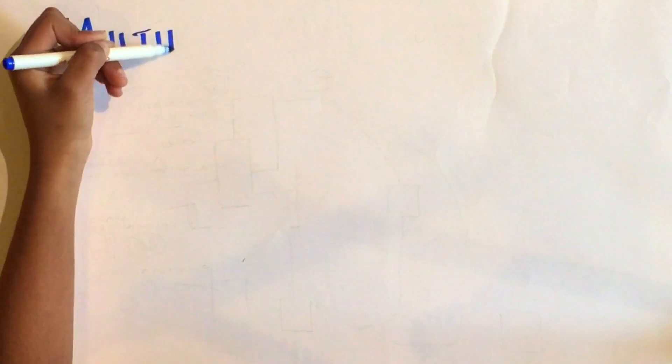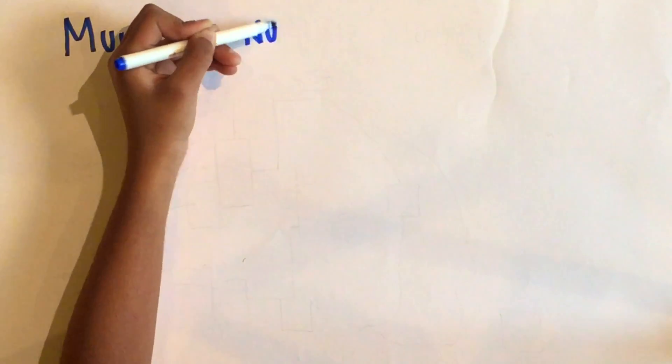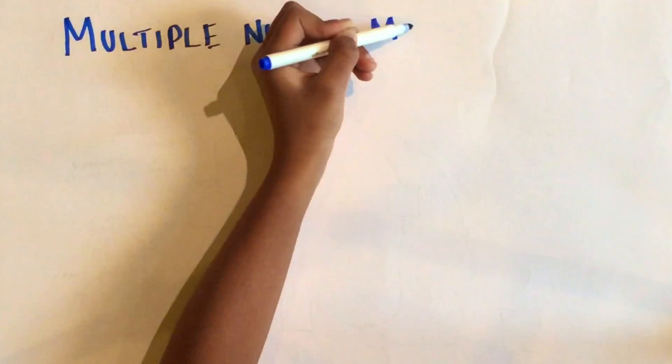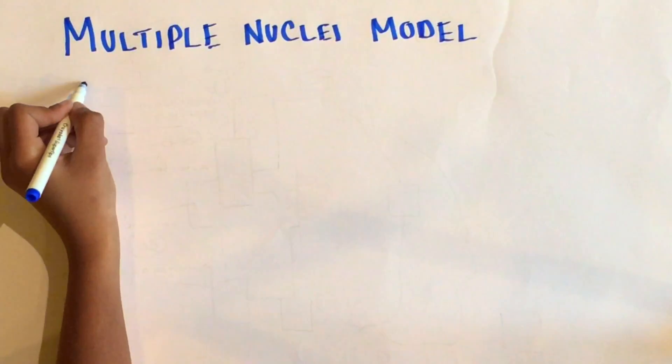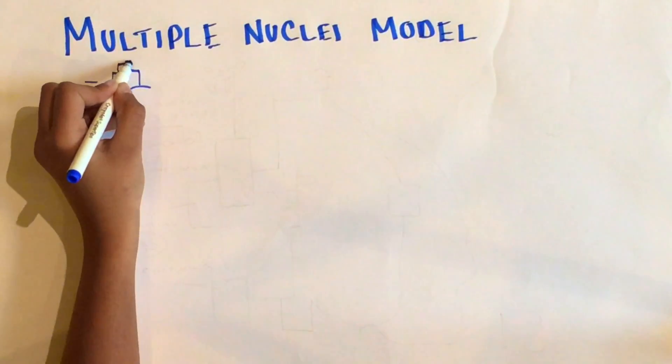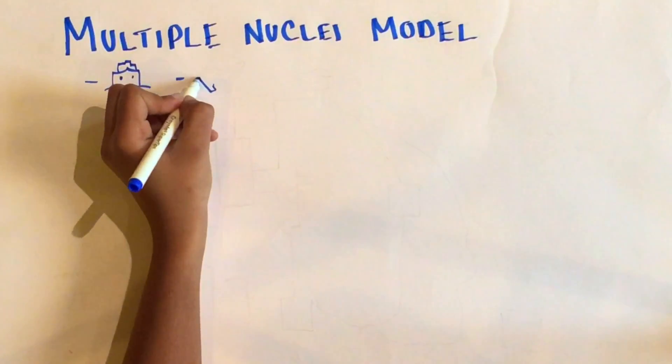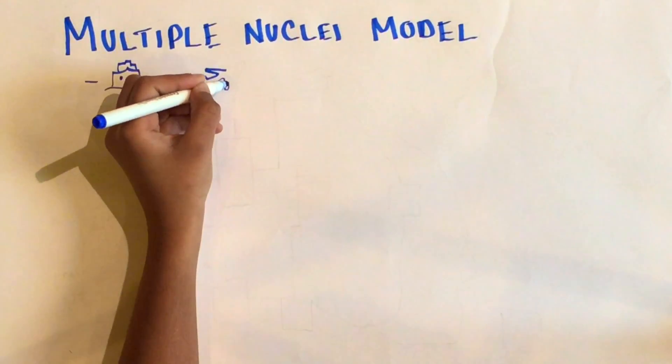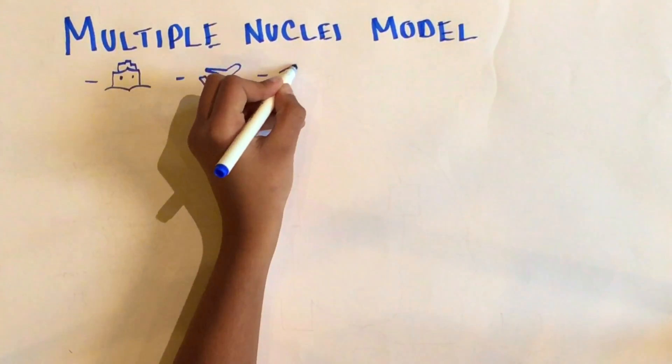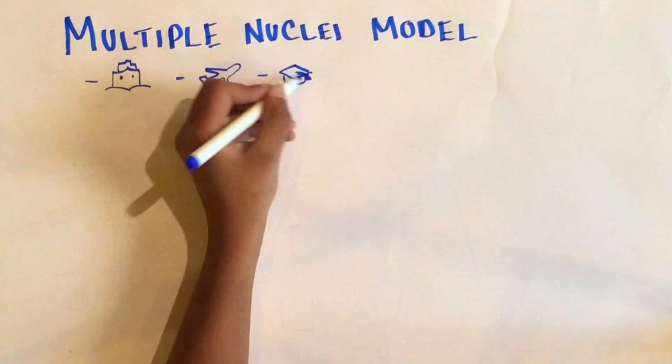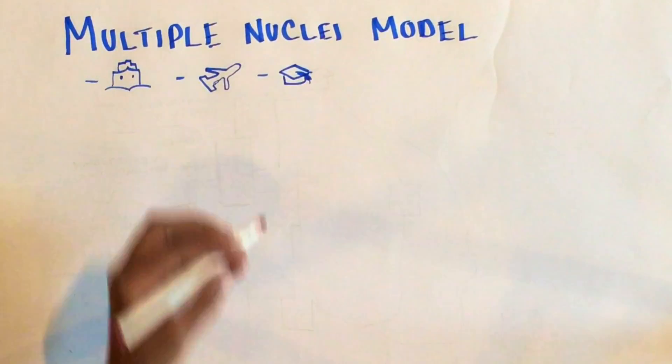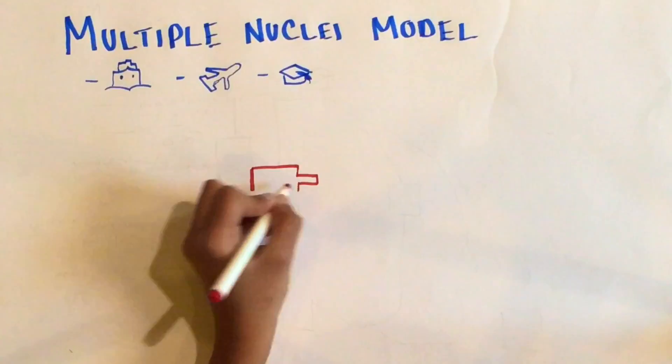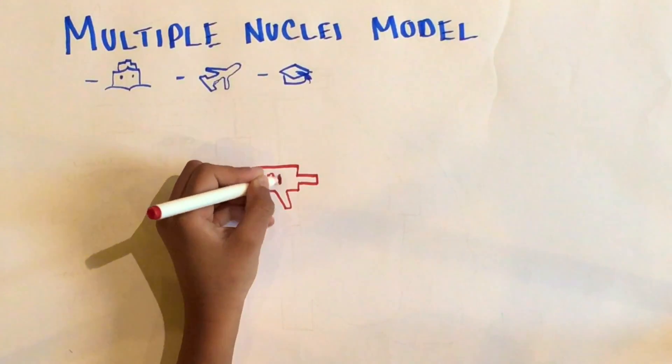The third city model we will be looking at is the multiple nuclei theory proposed in 1945 by geographers C.D. Harris and E.L. Ullman. This is fundamentally different than the two other models we have described because, while this model still has a CBD, it is made up of smaller nuclei. These nuclei, or nodes, would typically be in places like ports, universities, and airports.